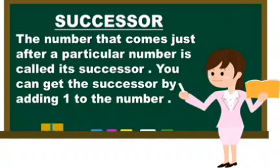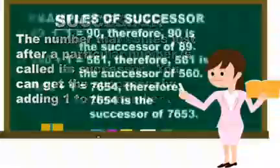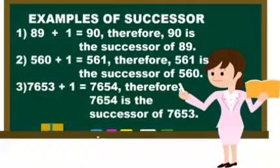The definition of successor is the number that comes just after a particular number is called its successor. You can get the successor by adding 1 to the number. That means successor is the after number of a particular number.